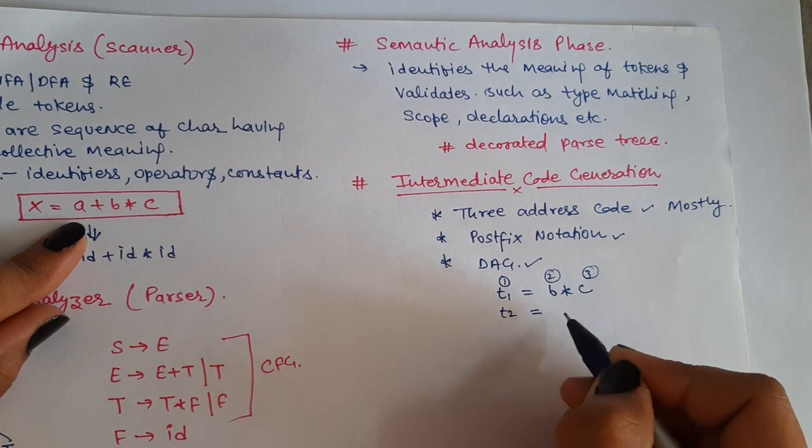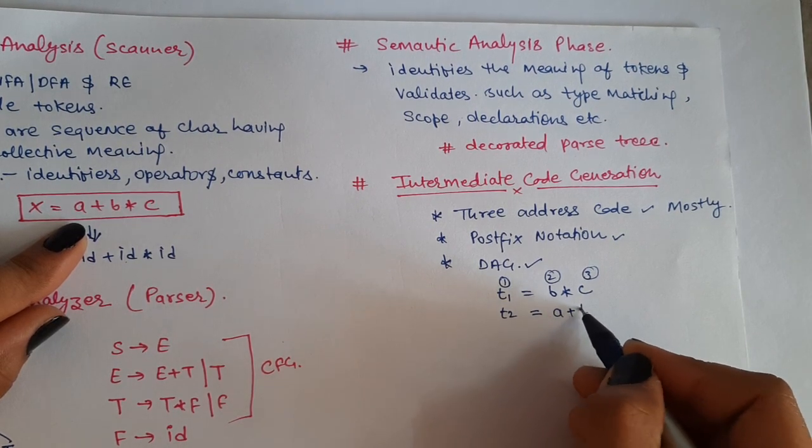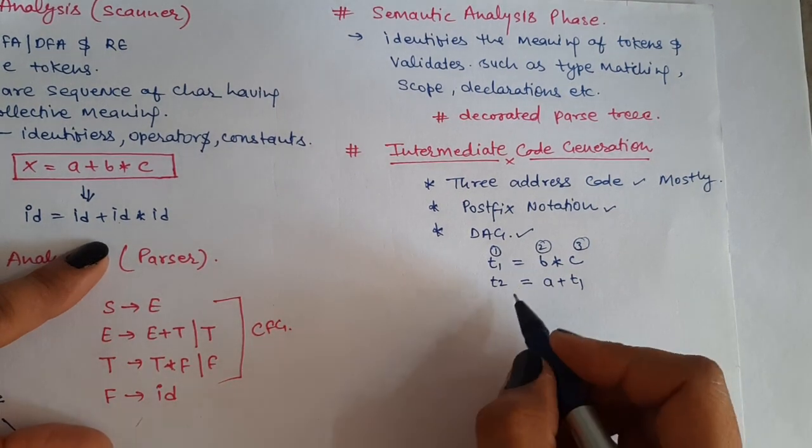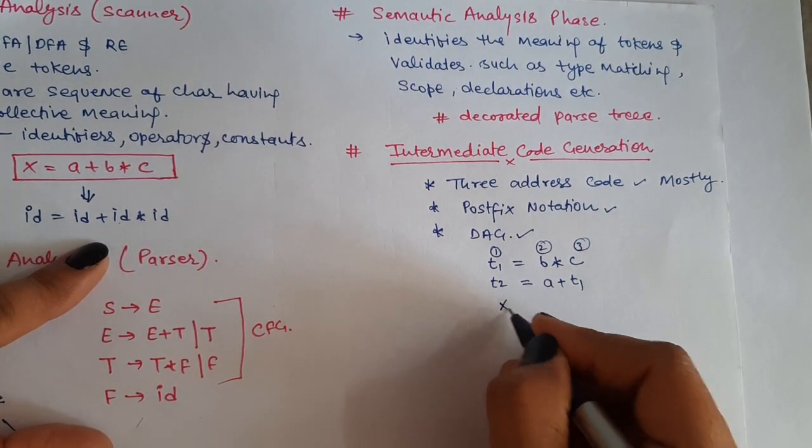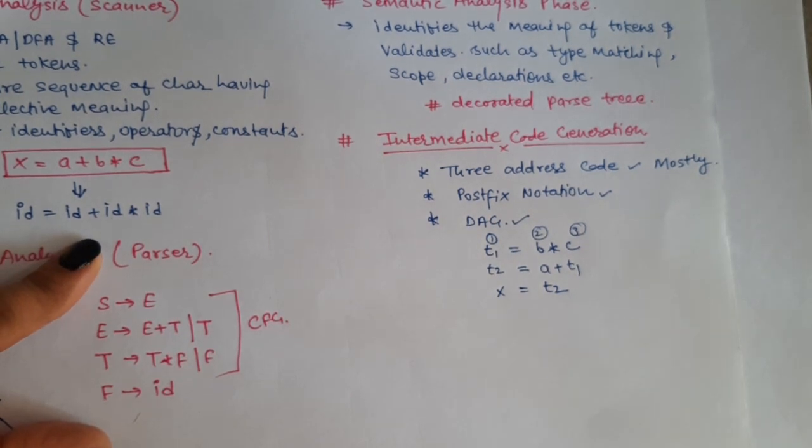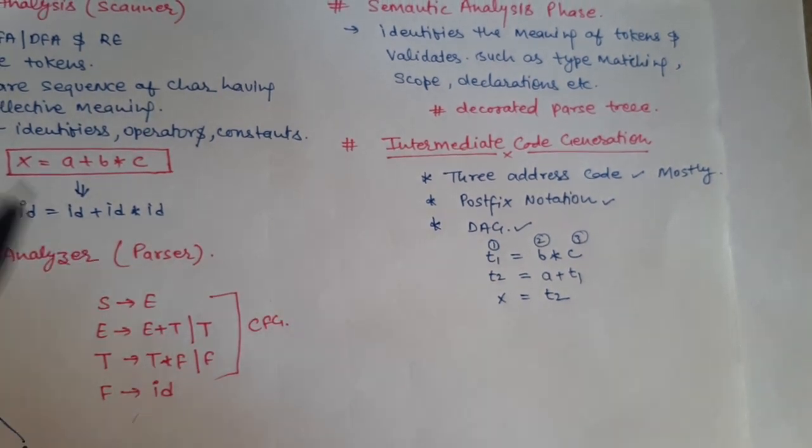This is how it will be: t1 is equal to b star c, then t2 is equal to a plus t1, because t1 what is t1? b star c value. And finally this value of t2 is assigned to the another variable that is x.